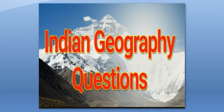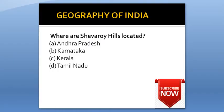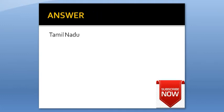Indian Geography Bits. Where are Shivaroy Hills located? Option A: Andhra Pradesh. Option B: Karnataka. Option C: Kerala. Option D: Tamil Nadu. Answer is Tamil Nadu.